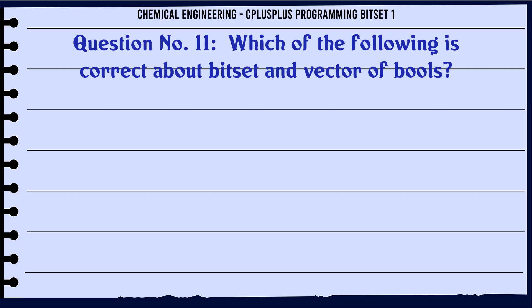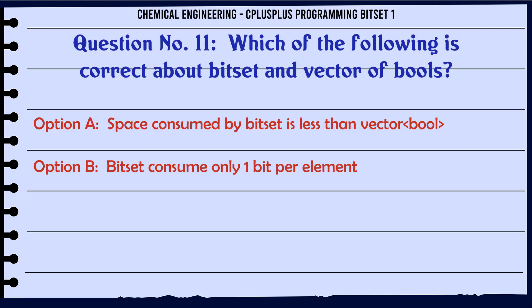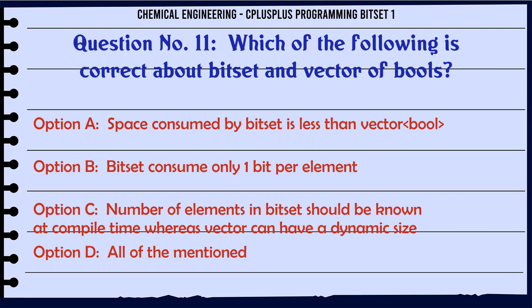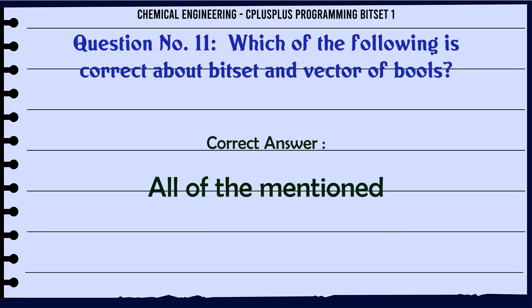Which of the following is correct about bitset and vector of bools? A. Space consumed by bitset is less than vector bool. B. Bitset consumes only one bit per element. C. Number of elements in bitset should be known at compile time whereas vector can have a dynamic size. D. All of the mentioned. The correct answer is all of the mentioned.